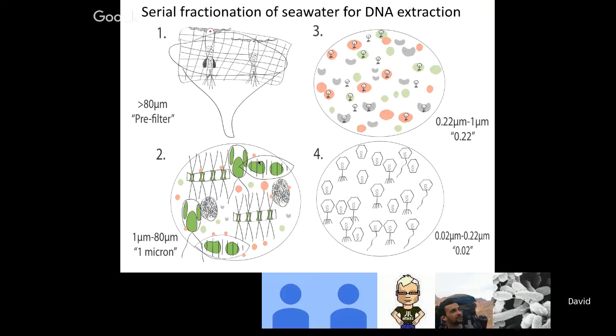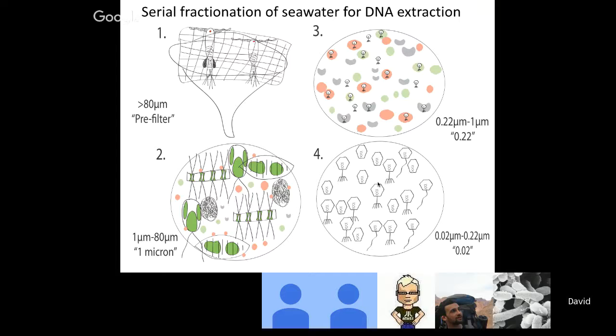The way we assess these microbial communities is by serial fractionation of seawater for DNA extraction. First, we remove large organisms — metazoans like copepods — with 80 micron mesh. Then we collect larger organisms like phytoplankton and particle-attached bacteria and archaea on a 1 micron glass fiber filter. Then we collect bacteria, archaea, infected bacteria, and smaller eukaryotes on a 0.2 micron filter. And finally we collect viruses on a 0.02 micron filter.